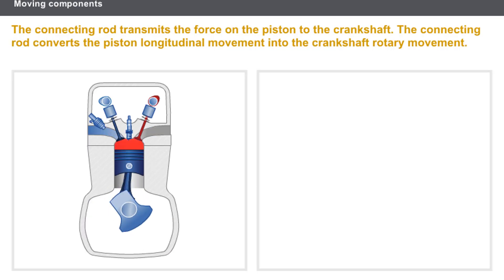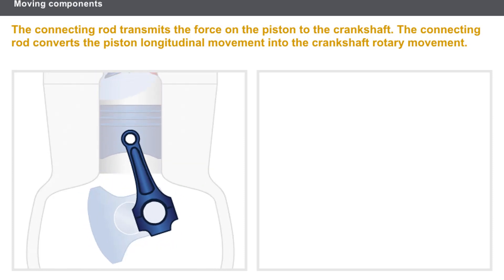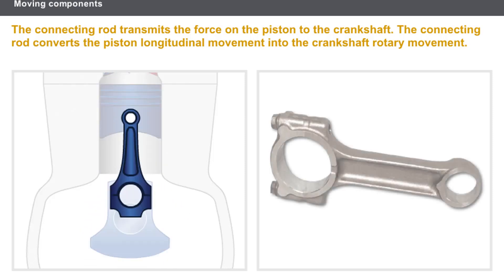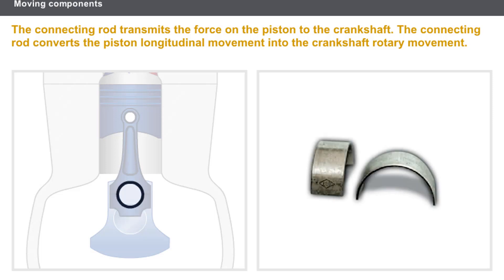The connecting rod transmits the force on the piston to the crankshaft and converts the piston's longitudinal movement into the crankshaft's rotary movement. The connecting rod, made of very high resistance forged steel, comprises: a small end joined to the piston via the gudgeon pin, and a big end which rotates around the crankshaft and consists of a removable big end bearing cap. The two removable sections of the big end bearing are fitted with steel anti-friction main bearing shells which are highly resistant to wear.